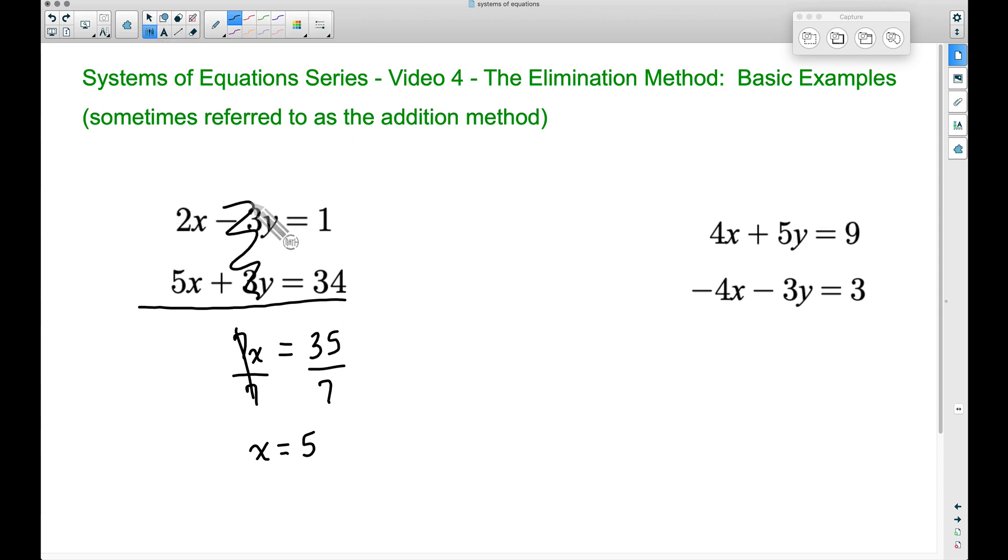I'm going to take this first equation, 2x minus 3y equals 1. Let's take the 5 and plug it into x, so we have 2 times 5—that is 2x—minus 3y equals 1. I'm just taking this first equation and plugging 5 into that x. So we have 2 times 5, that's 10, minus 3y equals 1.